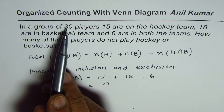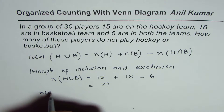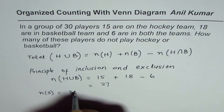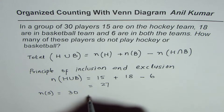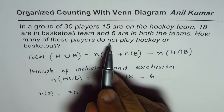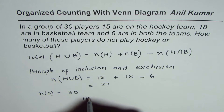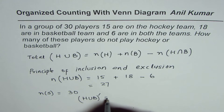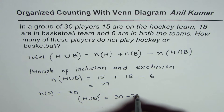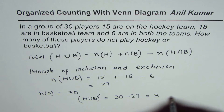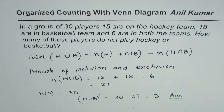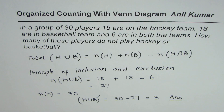We have a group of 30, so the number of players in the universal set is 30. Therefore, the players who do not play hockey or basketball are 30 minus 27, which is 3. So that is our answer. That is how you could answer such questions. I hope that helps. Thank you and all the best.